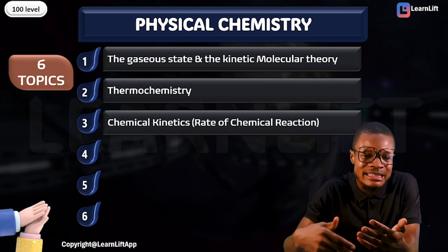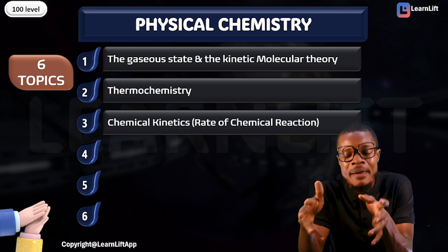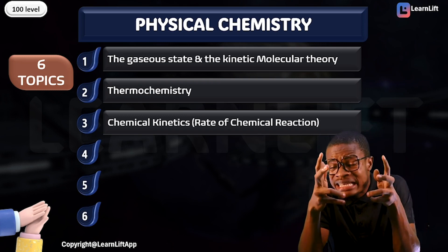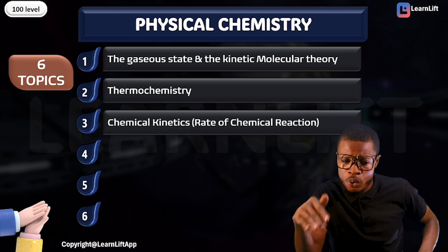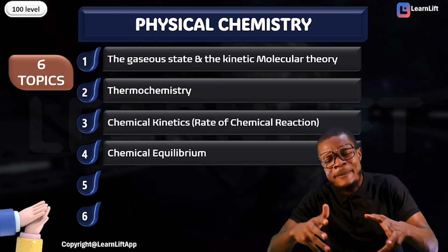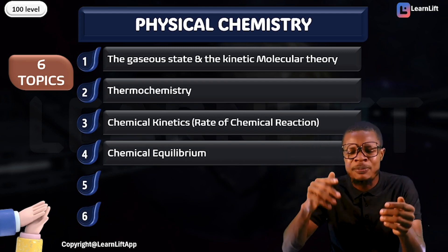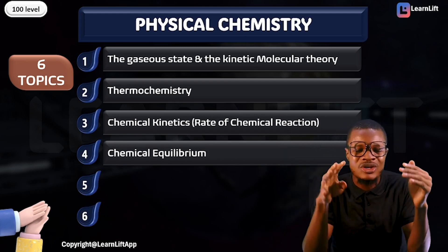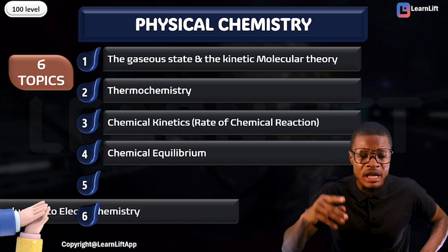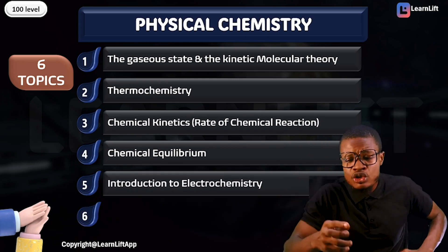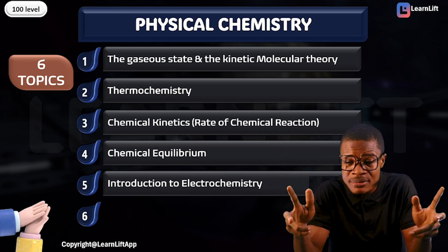Then we'll go into your Chemical Kinetics. Kinetics has to do with movement — how slow or how fast a chemical reaction will occur, that's the rate of chemical reactions. We're going to look at every singular thing at a higher level for 100-level. Then we're going to go into your Chemical Equilibrium — learn Chemical Equilibrium, Le Chatelier's Principle, look at some advanced equations, and move into the factors that affect a reaction in equilibrium.